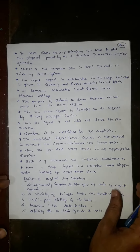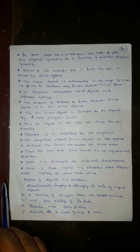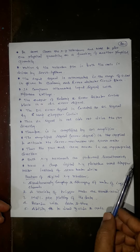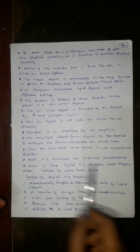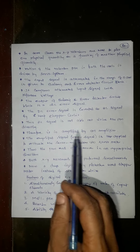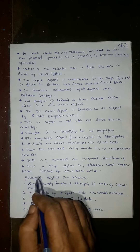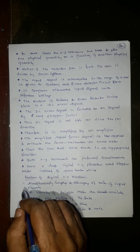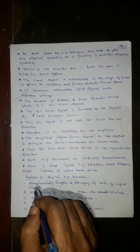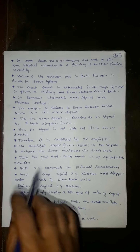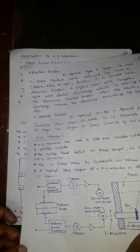XY recorders are used to plot one physical quantity as a function of another physical quantity. In the X axis, you can put one variable; in the Y direction, you can put another variable. The motion of the recorder pen in both axes is driven by a servo system or servo motor. The input signal is attenuated in the range of 0 to 5 millivolt and given to the balancing or error detector circuit.